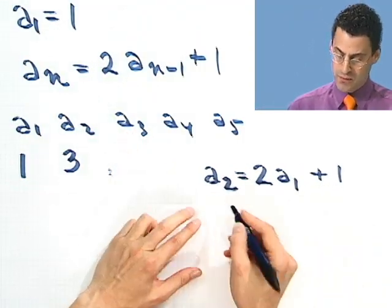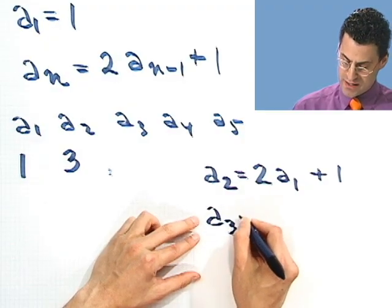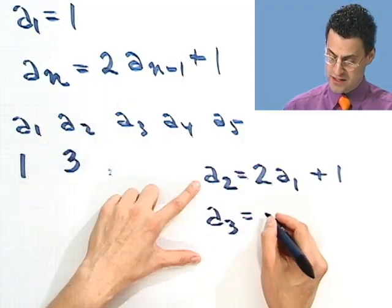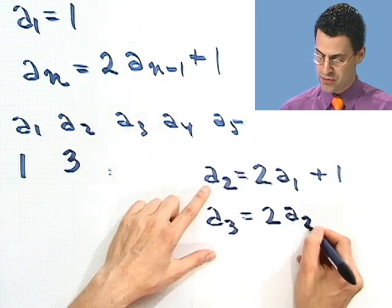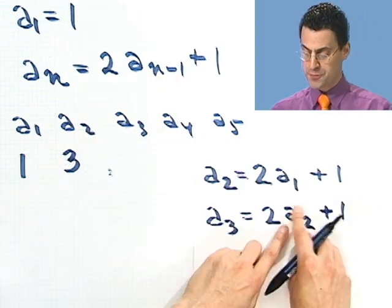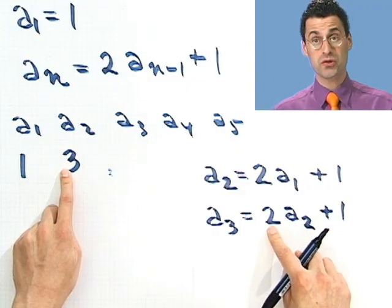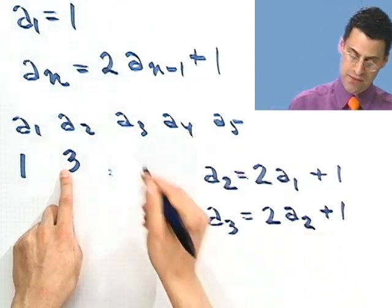What would the next term be? Well, a₃, if I let n be 3, I would see 2 times a₃ minus 1, which is 2, plus 1. So I need the previous term, which is 3, multiplied by 2, I get 6 plus 1 is 7.